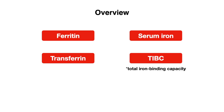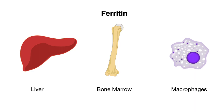Let's first start with ferritin, which is the main iron storage protein and this is where we store excess iron. Iron is mainly stored in the liver, bone marrow, and macrophages.